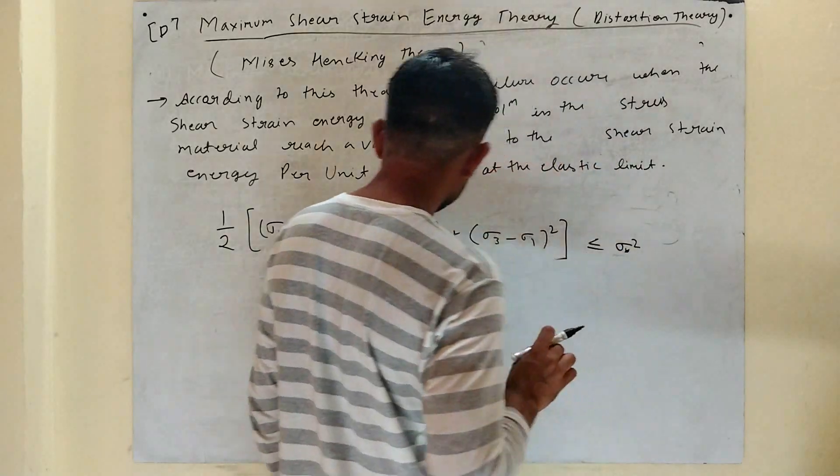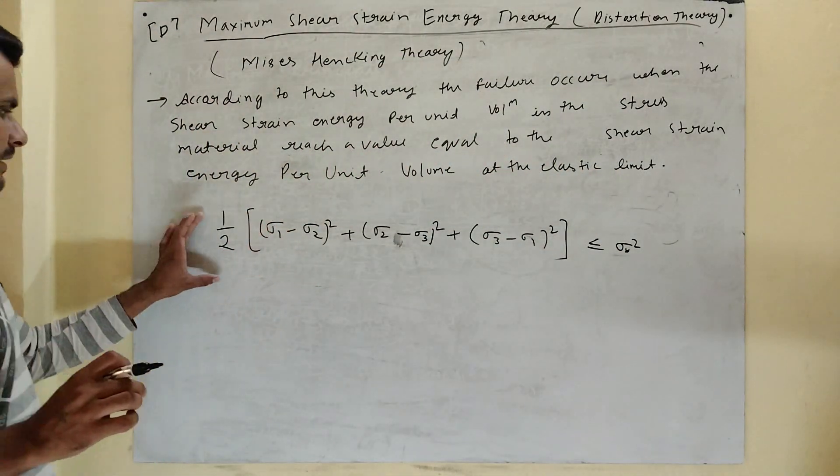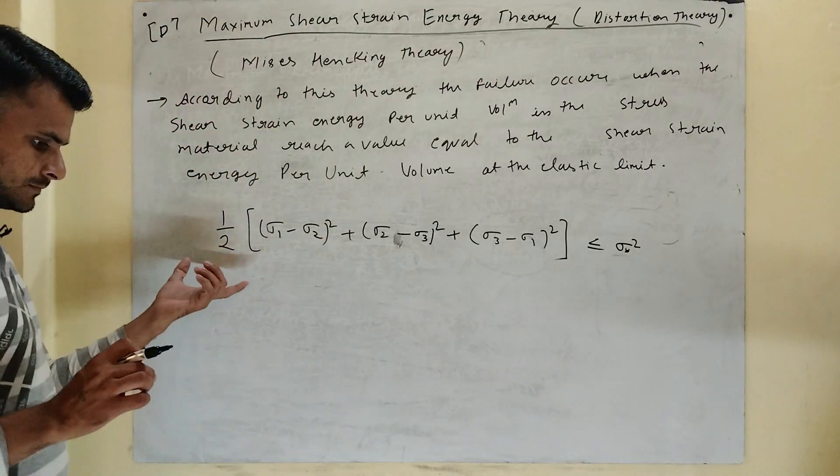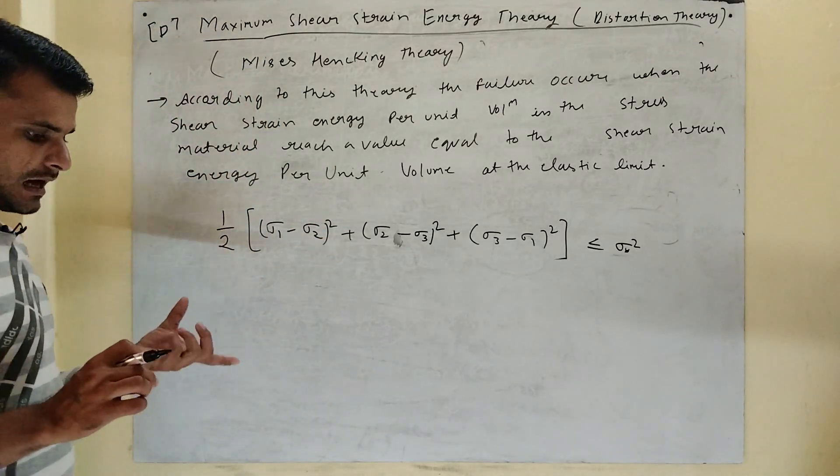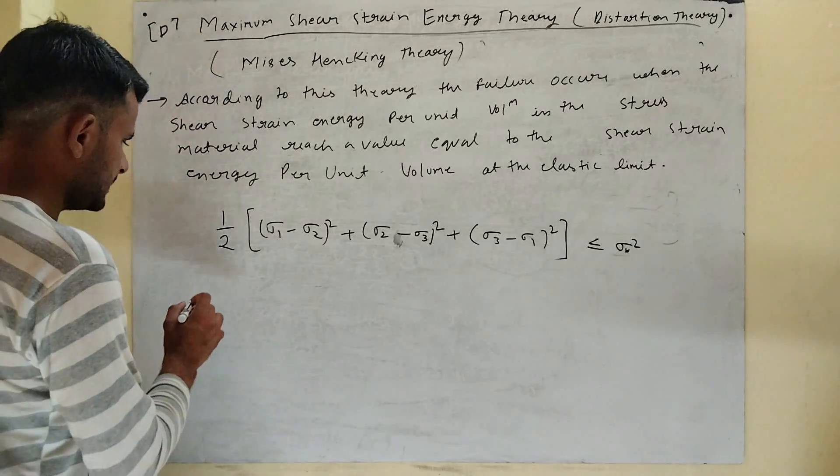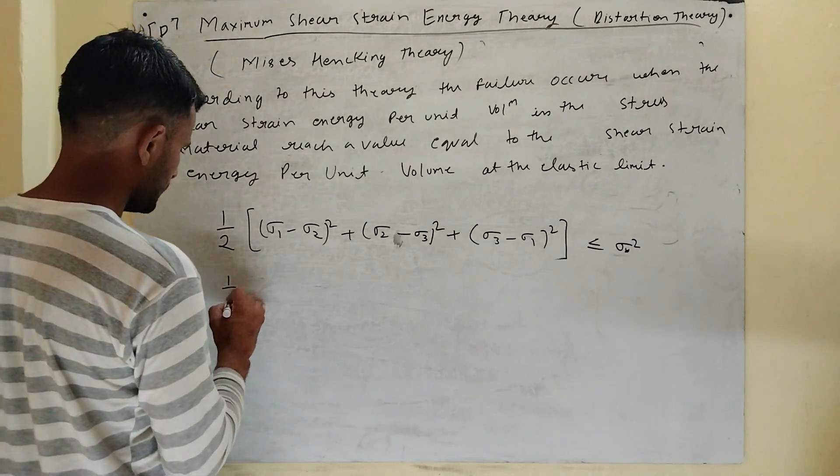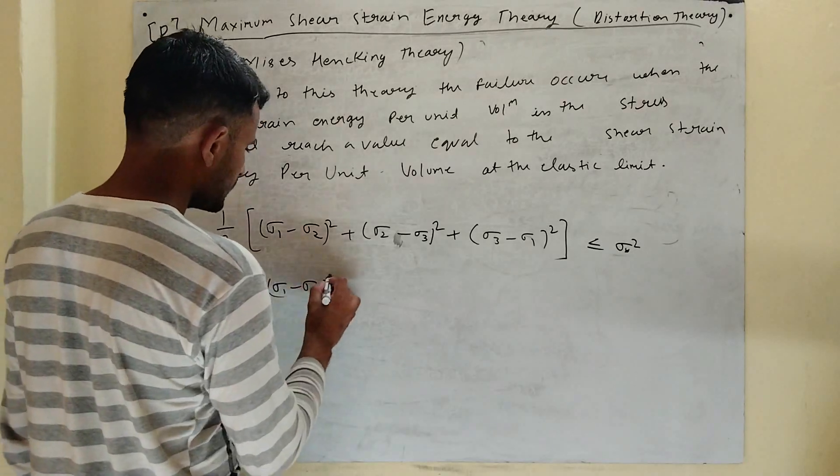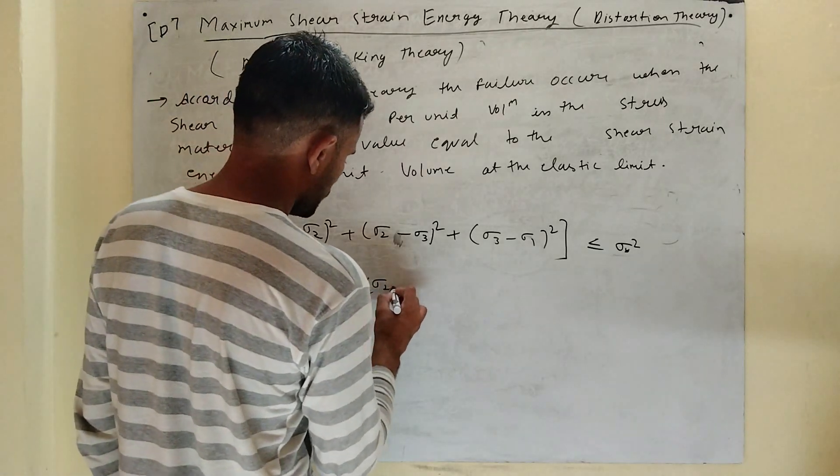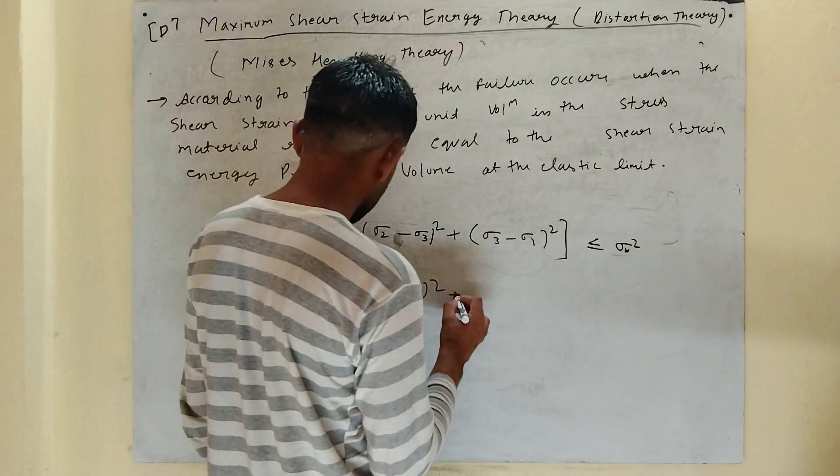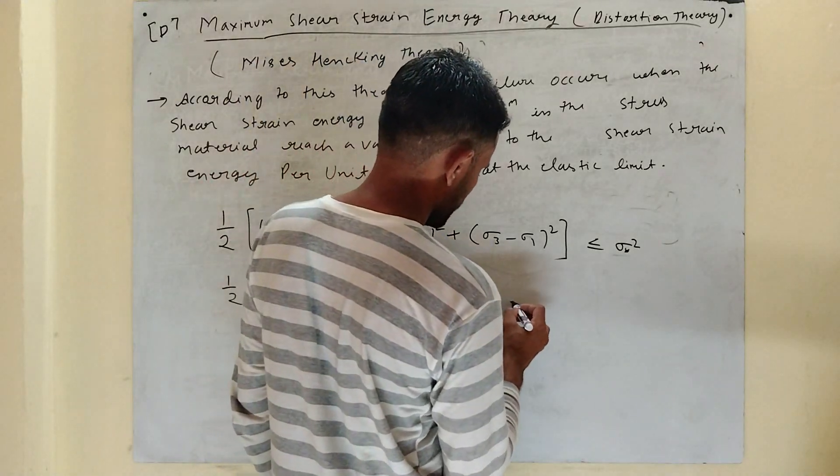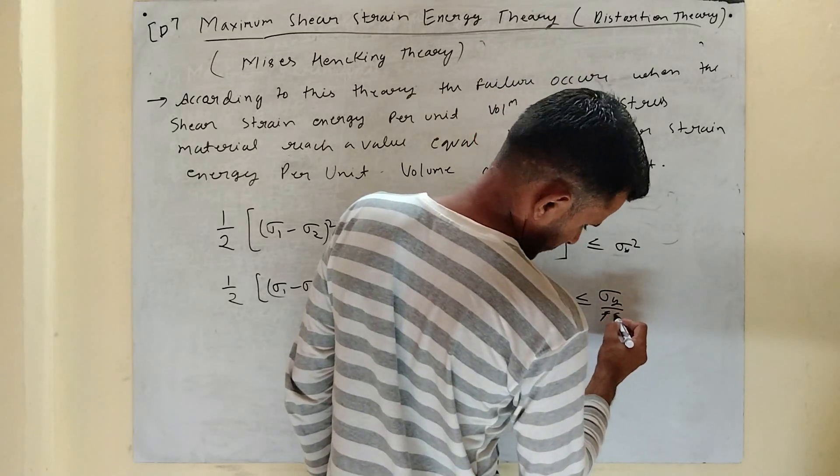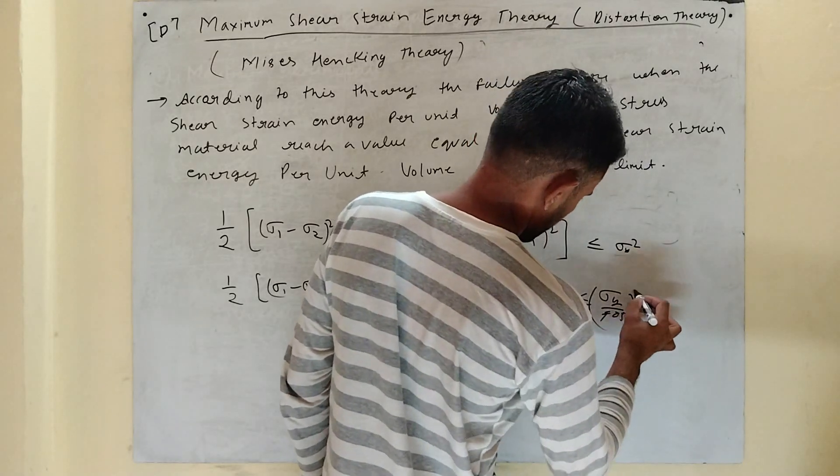Sigma y squared - this is the no failure condition. For design purposes, we use: sigma 1 minus sigma 2 squared plus sigma 2 minus sigma 3 squared plus sigma 3 minus sigma 1 squared less than or equal to sigma y upon factor of safety, whole squared.